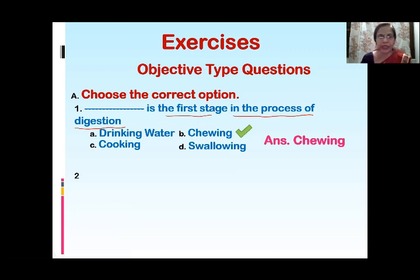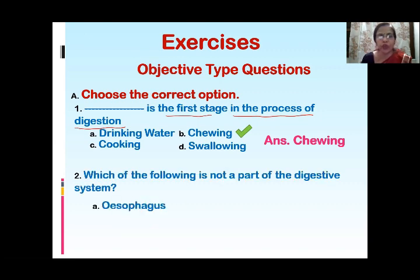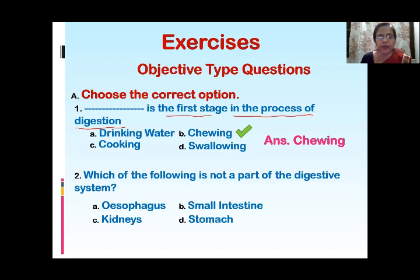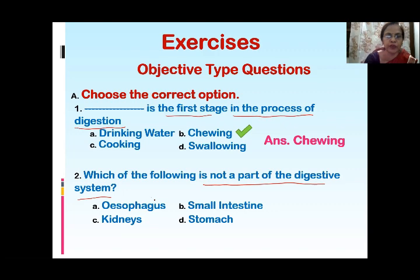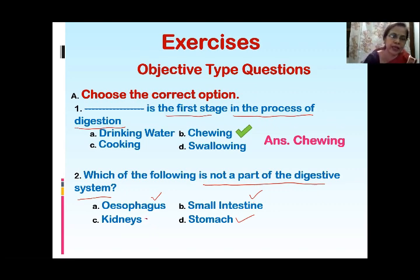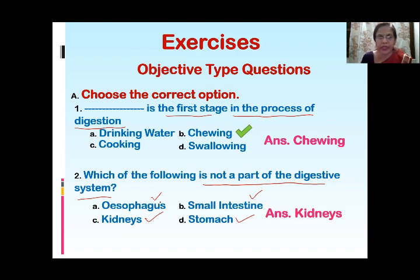The next question is: which of the following is not a part of the digestive system? Option one is esophagus, second is small intestine, third is kidneys, and fourth is stomach. Esophagus, small intestine, and stomach are all parts of the digestive system, whereas the kidney is an organ which participates in the process of excretion. So the answer will be kidneys.